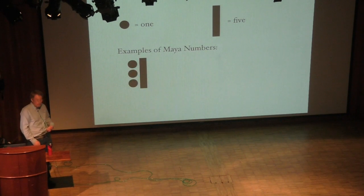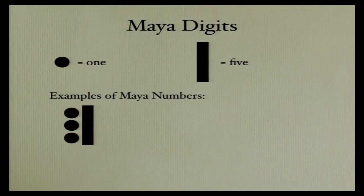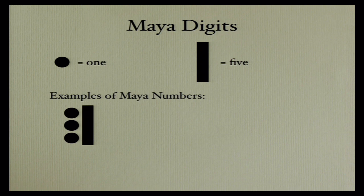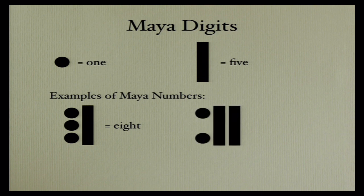Indeed, that's the case — we have dots and bars to represent Maya numerals. Three dots plus a bar is five, so that would be eight. Two bars and two dots would be twelve. These are basic Maya numbers. The bars were horizontal and stacked vertically, and you'll see them both ways.